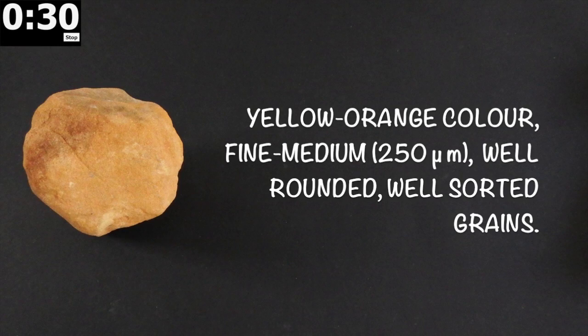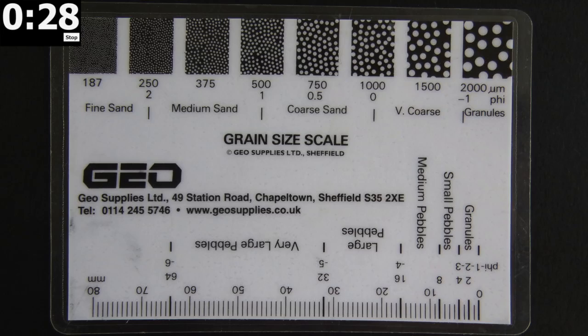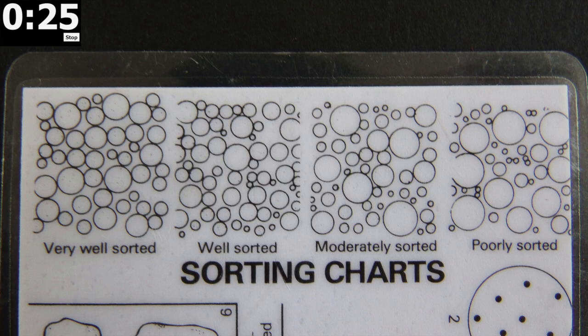Note the size and shape of the grains as well as how well they are sorted. A grain size card is a useful tool with charts and scales for helping assess this.